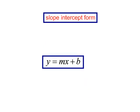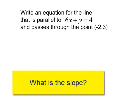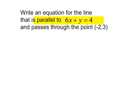Let's get to work. Write an equation for the line that is parallel to 6x plus y equals 4 and passes through the point (-2, 3). I need the slope. I do know that my line is parallel to 6x plus y equals 4.